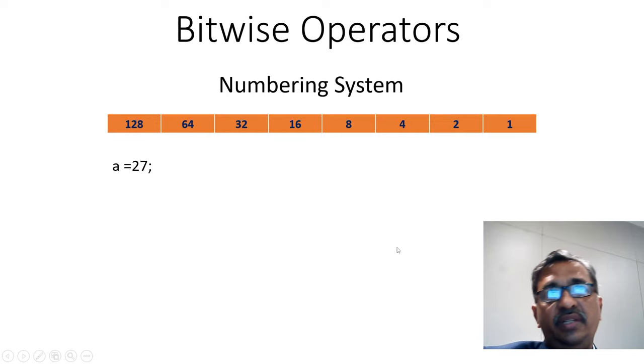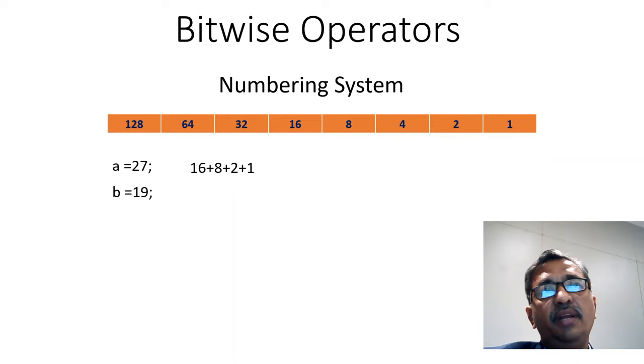Now consider A as 27. So 27 is nothing but 16 plus 8 plus 2 plus 1. Consider number B as 19, which is nothing but 16 plus 2 plus 1.